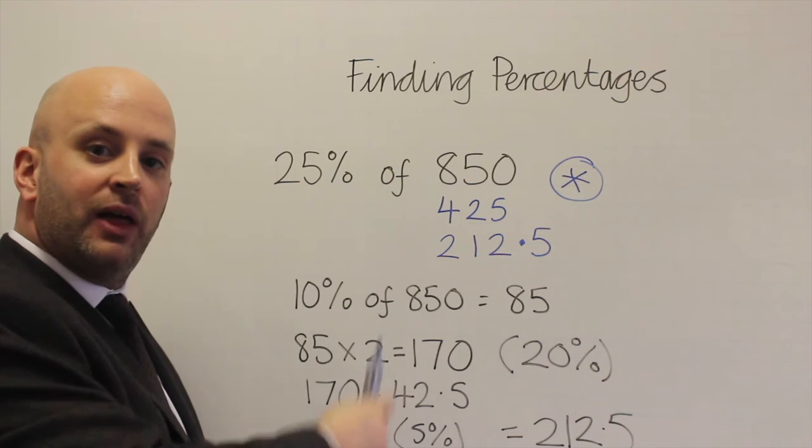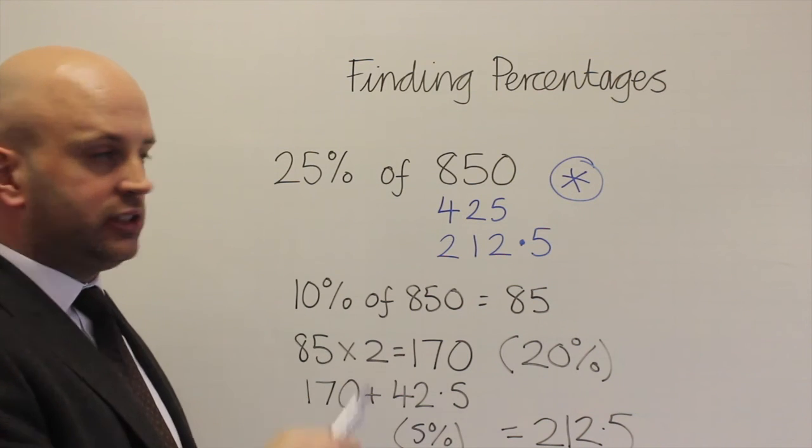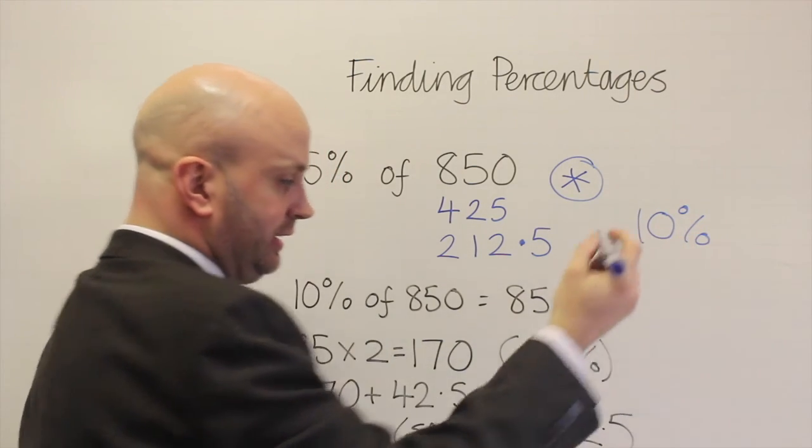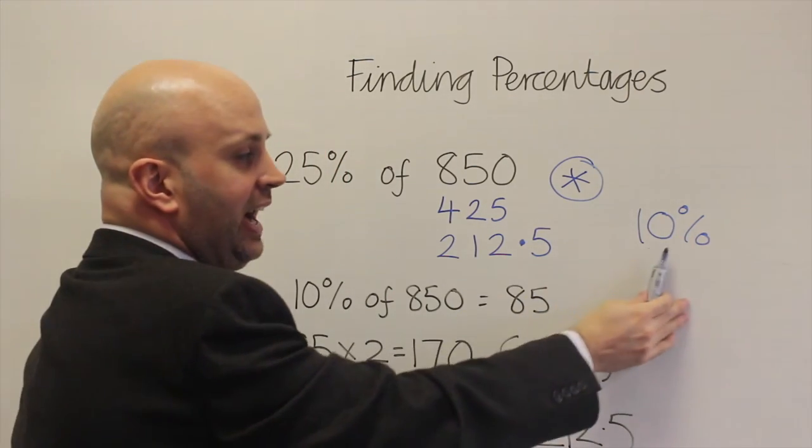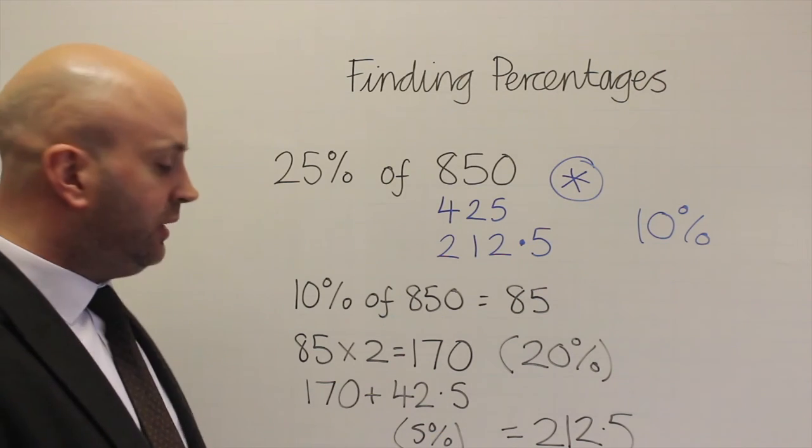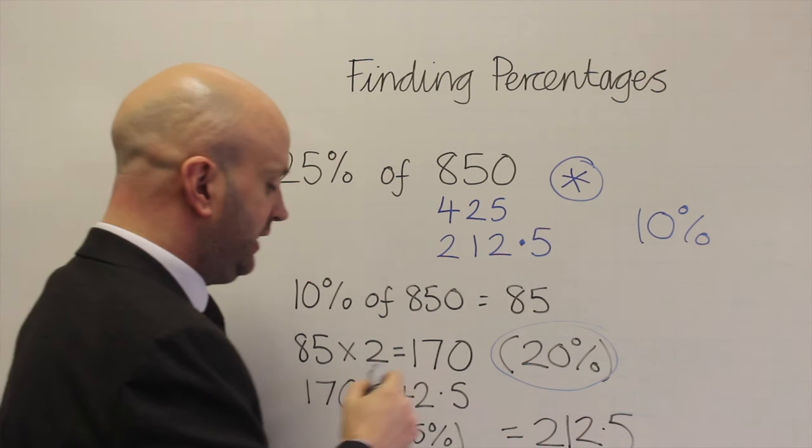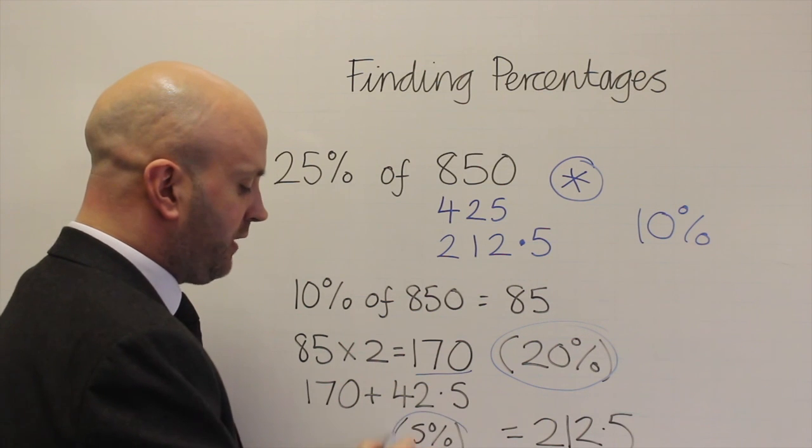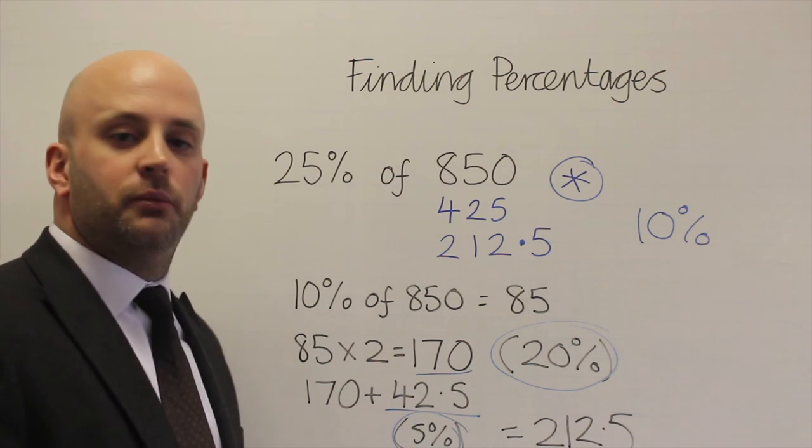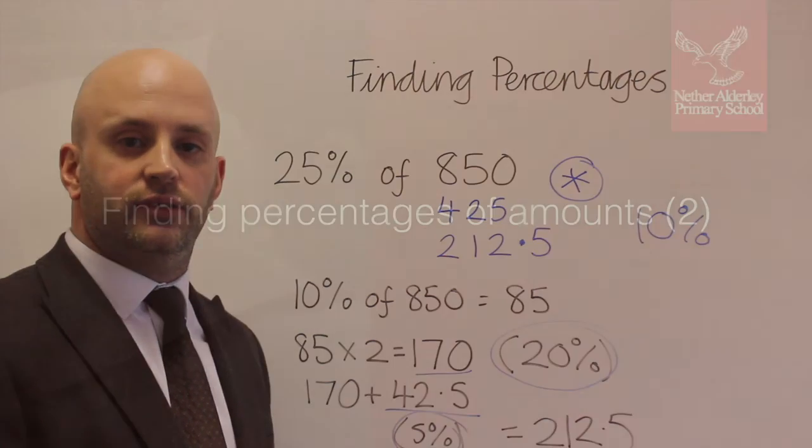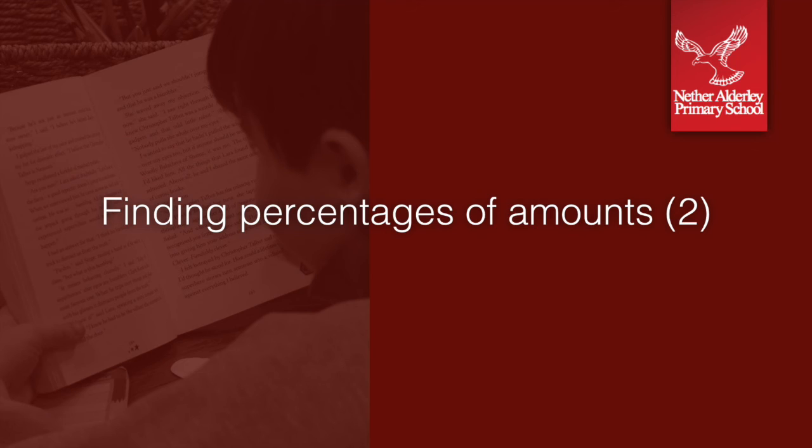But again, you've got this fallback method here if you're unsure how to do that, because we've already looked at finding 10%, we know how to find 5% by halving that. So what we're going to do is build up the 25%, so we've got 20% here with 170, we've got the 5% with 42.5 and we put them together to make 212.5.